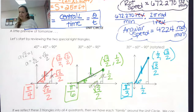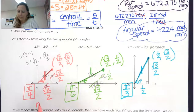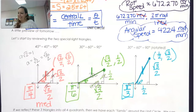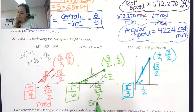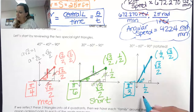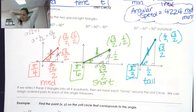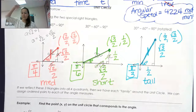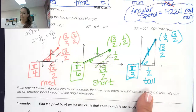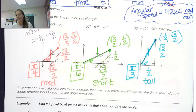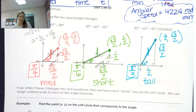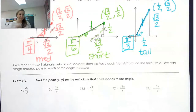Sometimes I call these families: the medium one (45-45-90) falls right in the middle between the axes, the short one is closer to the x-axis, and the tall one is farther from the x-axis. If we reflect these triangles into all four quadrants, we get a family around the unit circle and can assign ordered pairs to all angle measurements.